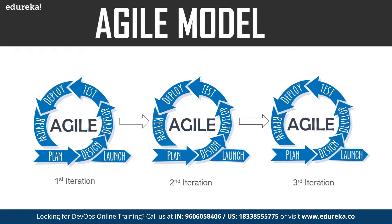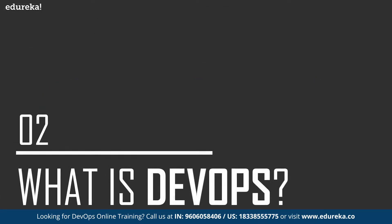This model was better than the previous model, but it too had a few drawbacks. While this model brought agility to the development team, the operations team still did not come up to speed with the development team. Because of this, there was constant conflict between the development team and the operations team, which hampered the pace of software development and release. This was the biggest drawback of the agile model, and the next approach is the DevOps approach.